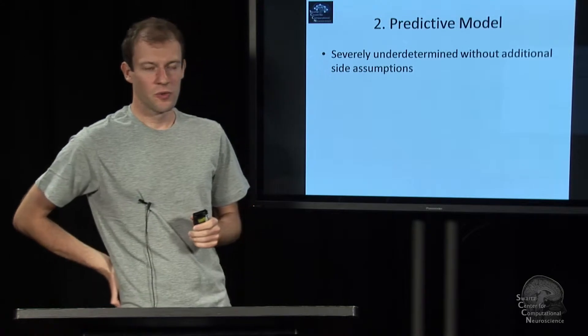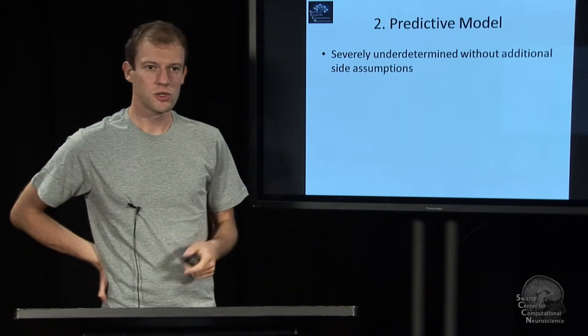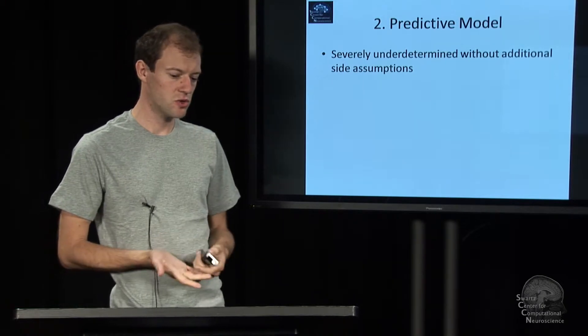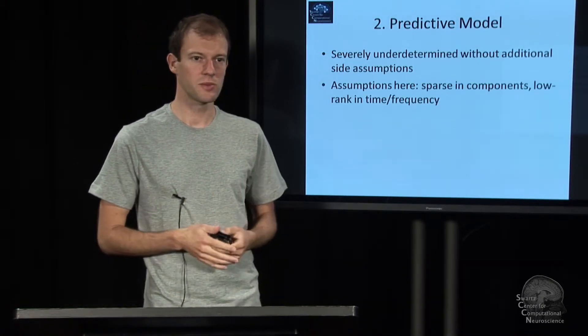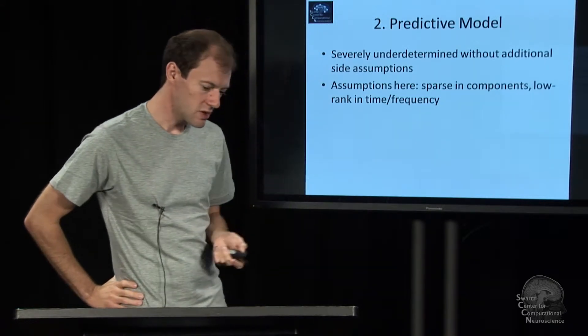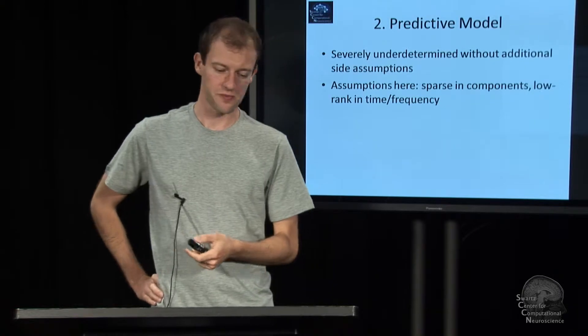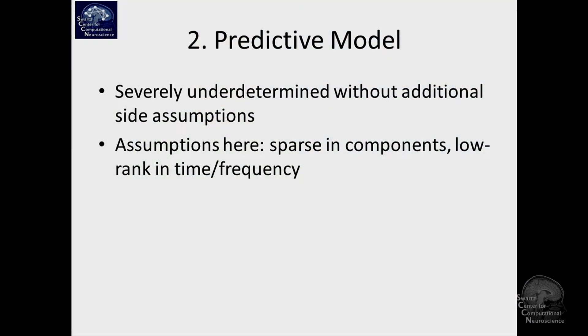So to learn this, we have, again, this problem of having underdetermined solutions, so too many parameters, too few trials. And so we need to assume something to make it tractable, statistically. What we assumed here is the model is going to be sparse in components, uses only a few components. This is what I said before. If the components are independent, you can assume that only a few of them actually are relevant to your question.